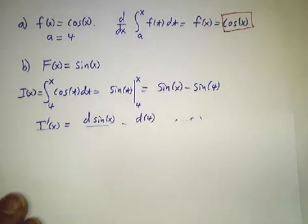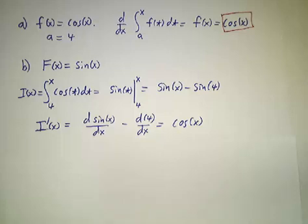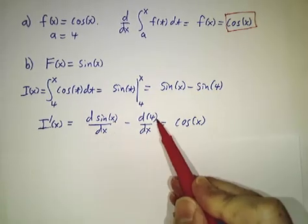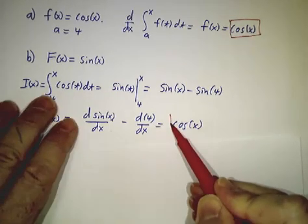So if I(x) is sin(x) minus sin(4), then the derivative of I(x) is the derivative of sin(x) minus the derivative of sin(4), that gives us cos(x) minus 0. So either way, we get the same answer.